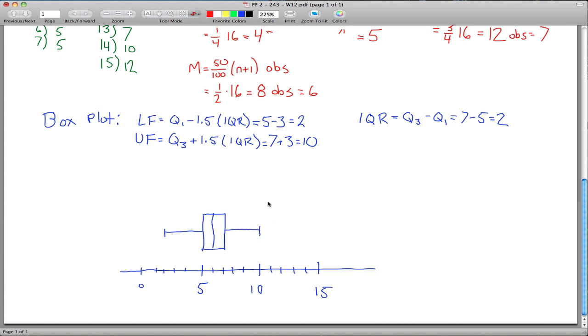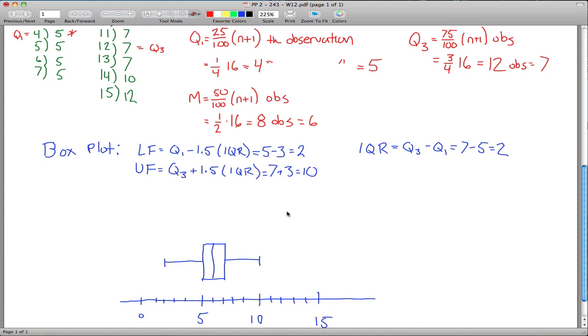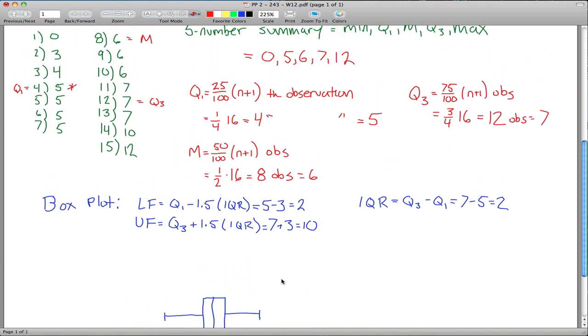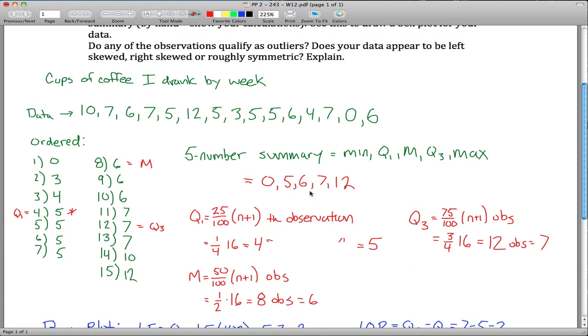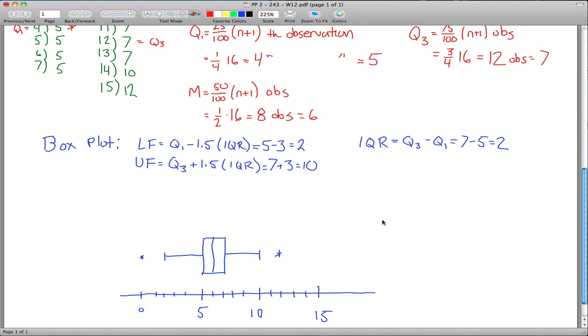And then I want to put a star anywhere where there's an outlier. So observations less than 2 or bigger than 10, looks like there was a couple. About 1 out here at 0, and then 1 out here at 12. So I drank so little coffee and so much coffee that you might consider those outliers, which I think answers, does any of the data qualify as outliers? I would say that 0 and 12 qualify as outliers because they're outside the fences.